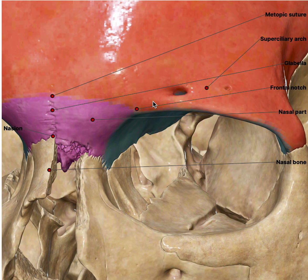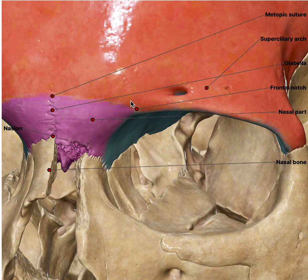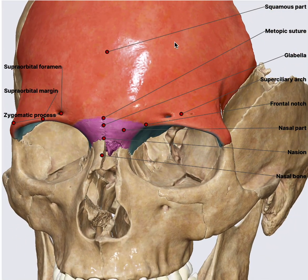The frontal nerve is a branch of the ophthalmic nerve, that is V1, coming from the trigeminal nerve. When the frontal nerve divides, it gives the supraorbital and supratrochlear branches, which supply the forehead.